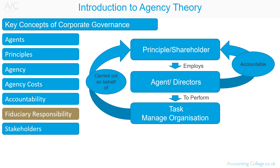Fiduciary responsibilities describes the relationship between an agent and a principal. Fiduciary responsibility is the duty to act solely in another party's interest. Where the agent has been trusted to manage and protect the company for a principal, the agent has the responsibility to carry out his or her role in the best interest of the principal.